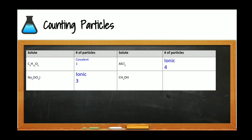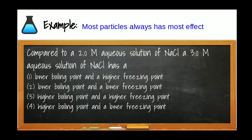Comparing a 2 M (molar) aqueous solution of NaCl to a 3 M solution of NaCl: the capital M represents concentration. The greater the amount of particles, the greater the effect, so the 3 M solution will have a higher boiling point and a lower freezing point. The hot gets hotter and the cold gets colder every single time.